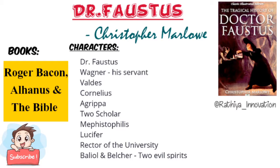Faustus wants to attain power, honor, and omnipotence — things he can get only through the study and practice of magic. He says that a sound magician is a mighty god, and he therefore decides to take up the study of magic, through which he would be able to conjure spirits and enjoy power fit only for the gods. He calls his servant Wagner and asks him to request his friends Valdes and Cornelius to come to him.